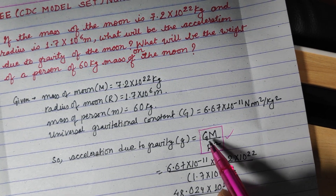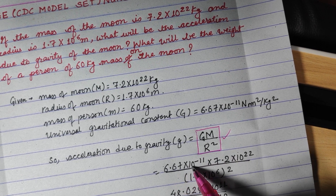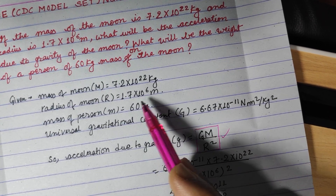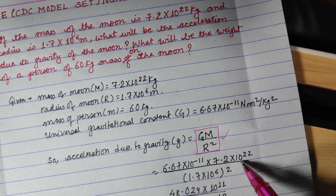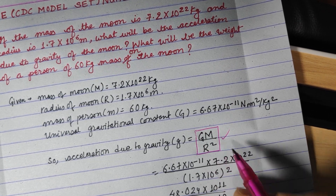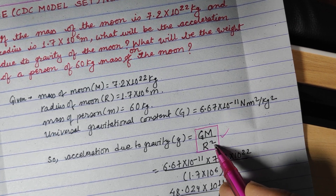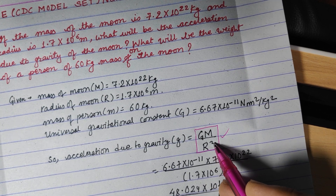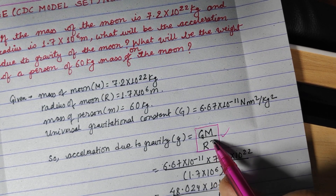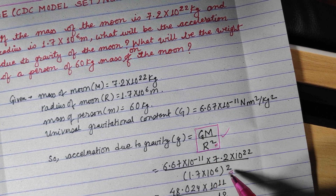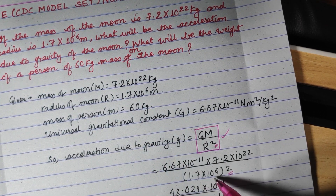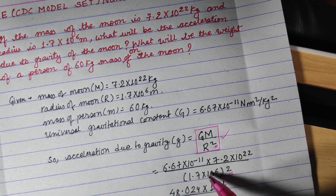Now we need to substitute the values: 6.67 into 10 to the power minus 11, multiplied by M which is 7.2 into 10 to the power 22, divided by R square, which is 1.7 into 10 to the power 6, whole square.